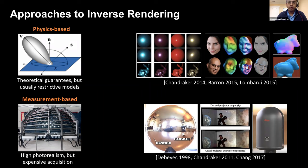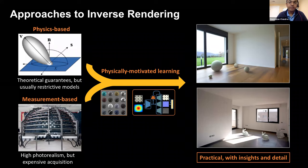One previous set of approaches includes physics-based methods, which yield theoretical guarantees but may not generalize beyond their modeling assumptions. Another set relies on expensive measurement acquisition, yielding high photorealism as seen in Hollywood movies. In contrast, we wish to develop learning-based methods that are more practical with low inference times, going beyond standard data-driven deep networks to physically motivated ones that leverage insights from the physics of image formation.